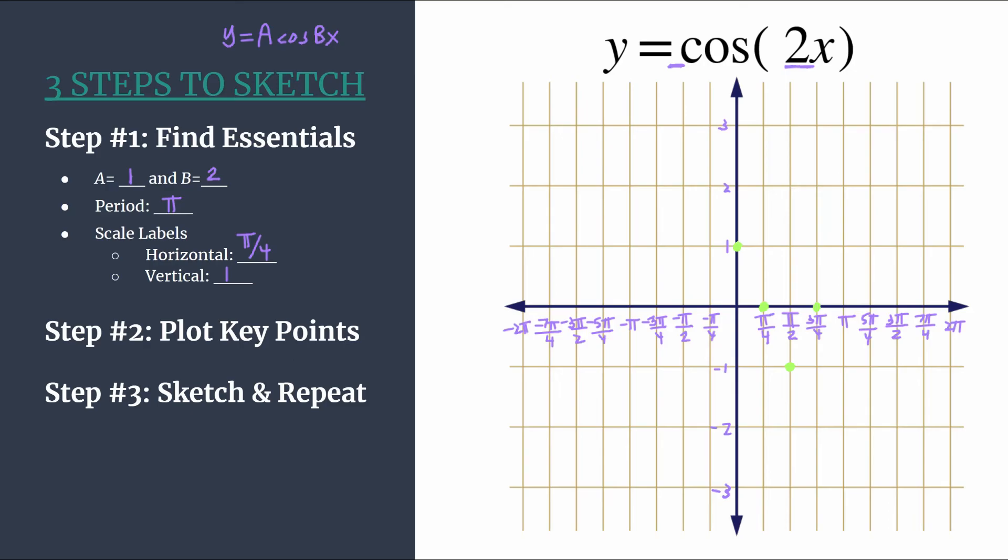So you hopefully can see the sine curve forming with these key points. And let's go ahead and put another point, which will just start our next cycle. But you can see that we have a full cycle of cosine here. Our period is pi. So let's go ahead and do step three, sketch this. We'll sketch our cycle. We have one cycle of cosine 2x.